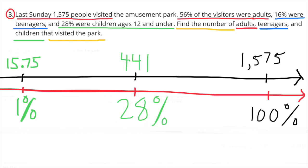For children, I multiplied 1% times 28 to get 28%, and I multiplied 15.75 times 28, and that gave me 441 children that visited the park.